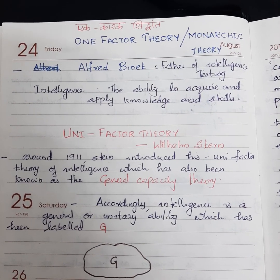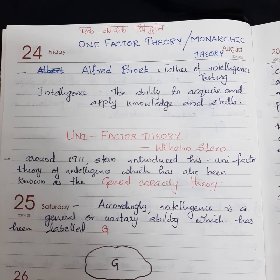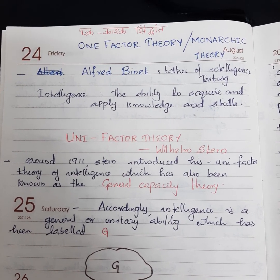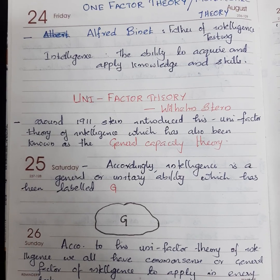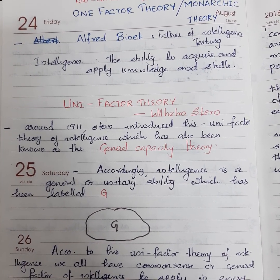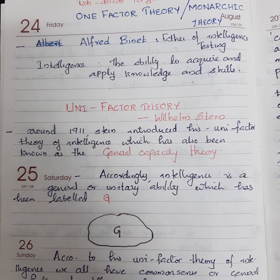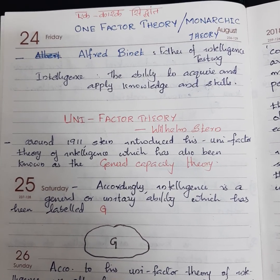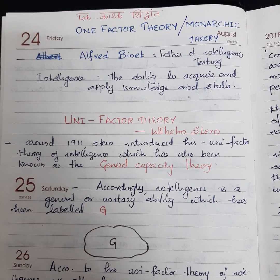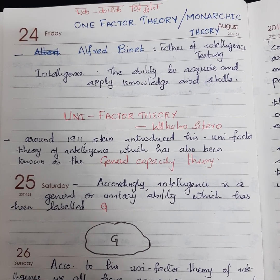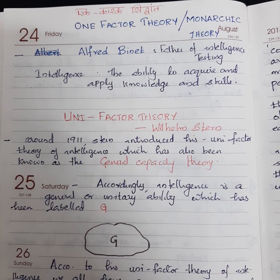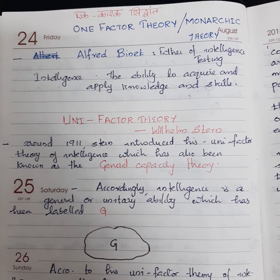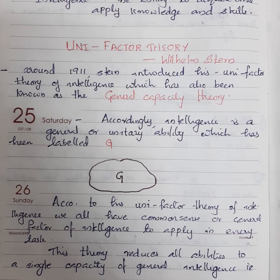As we know, intelligence can be defined as the ability to acquire and apply knowledge and skills. We all know the name Alfred Binet, who is known as the father of intelligence testing. Around 1911, Wilhelm Stern introduced his unifactor theory of intelligence, also known as the general capacity theory. According to this theory, intelligence is a general or unitary ability labeled with the symbol G.